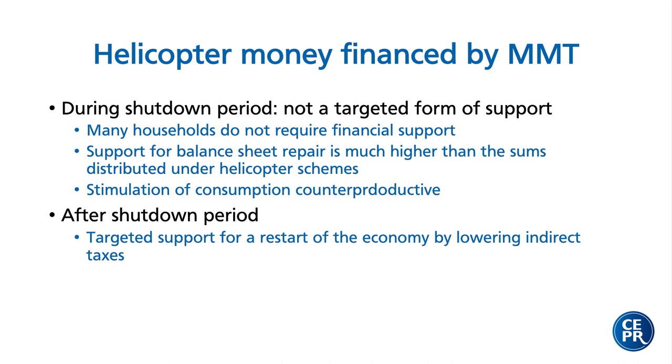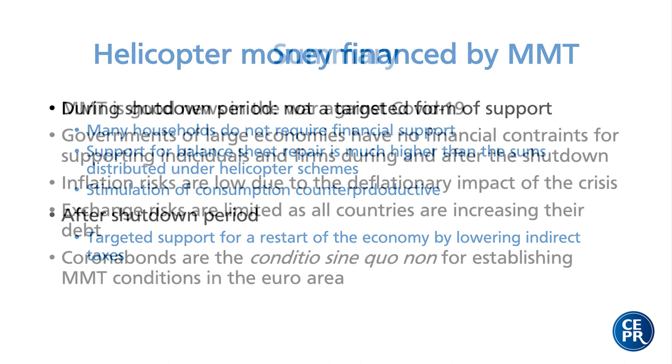After the shutdown, of course, we need some support to restart the economy and consumption. But here again, helicopter money is not a very targeted means — it's much better to support directly the sectors that have suffered most from the shutdown, especially social consumption. The reduction of indirect taxes might be more useful.